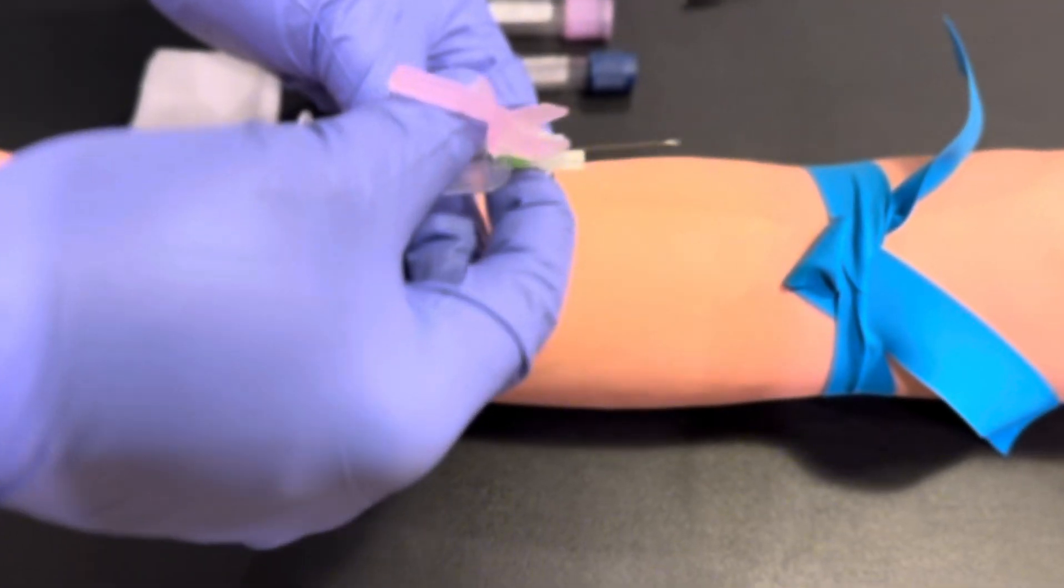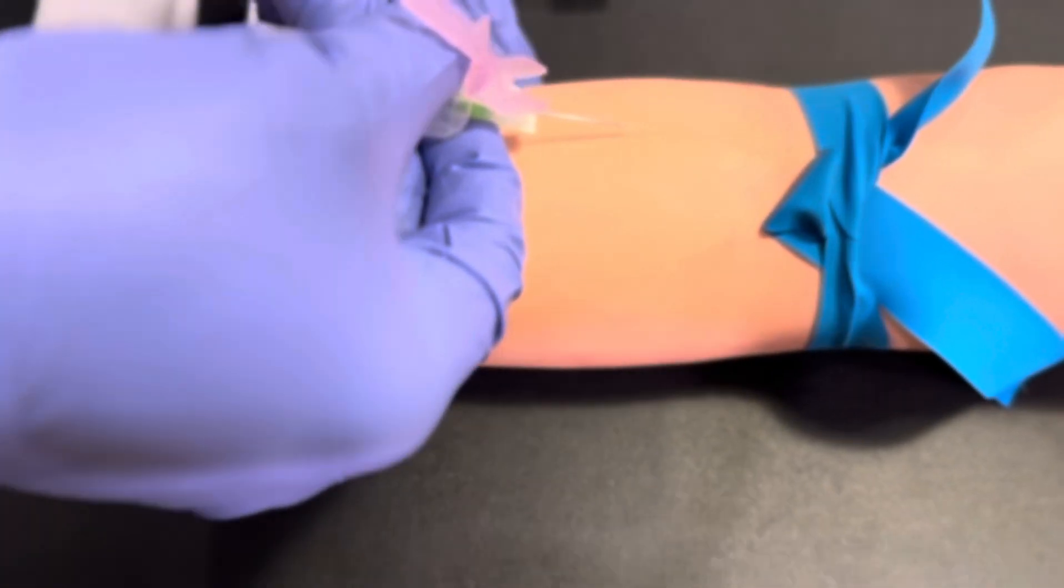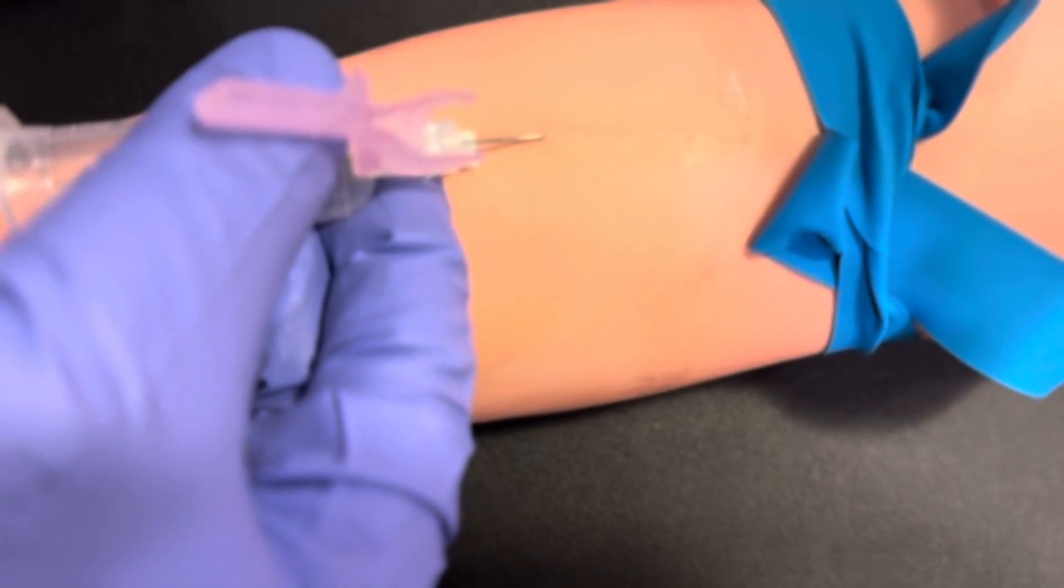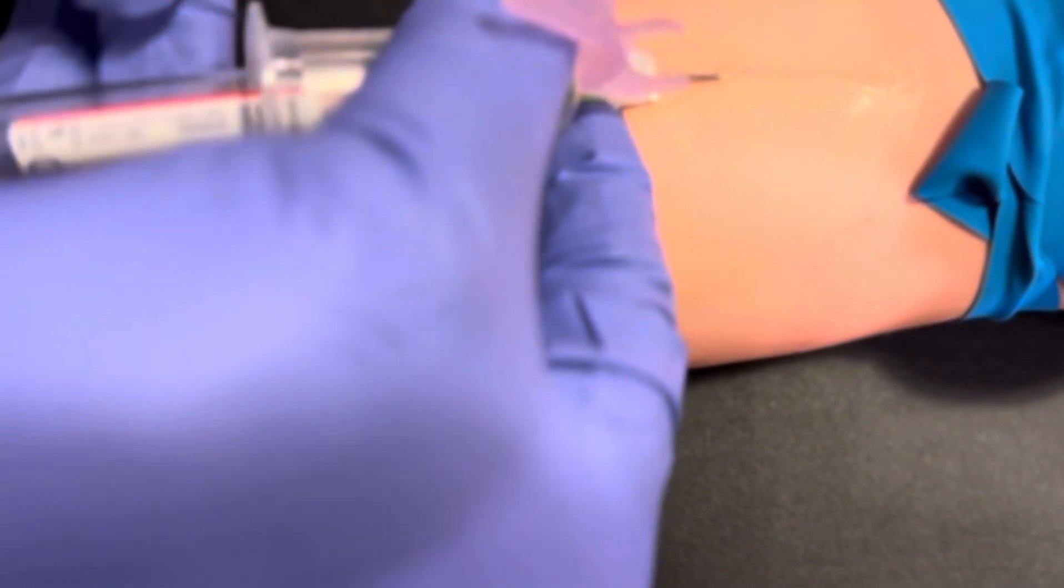Uncap the straight needle. Perform the venipuncture at a 15 to 30 degree angle of insertion and ensure that the needle is stabilized.